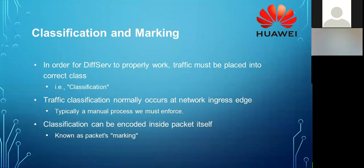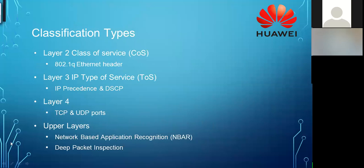To implement QoS, we need to classify traffic, mark it, and then place it in different queues. Based on which queue the traffic takes, the prioritization and bandwidth reservation vary. We classify traffic types — voice, BGP routing protocol, Telnet/SSH, SNMP, NTP, STP — and mark them so they can be identified by different colors or numbers. This is called classification.